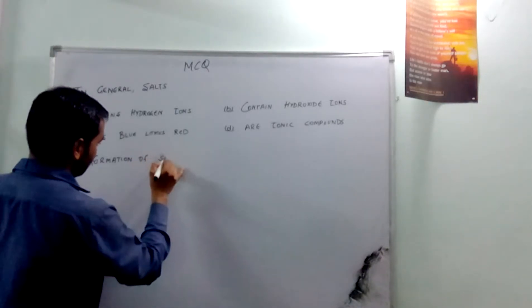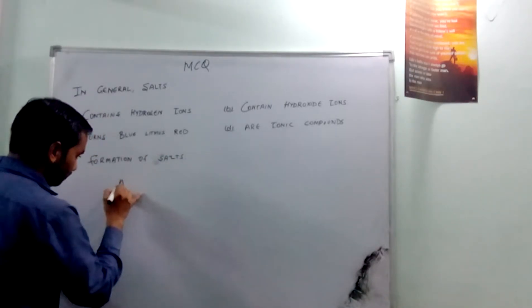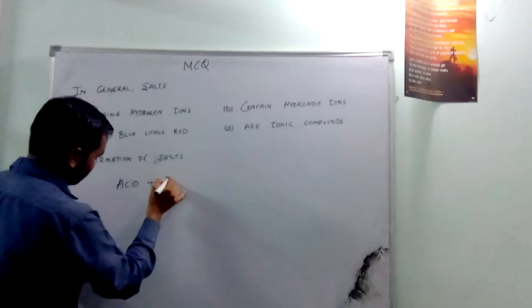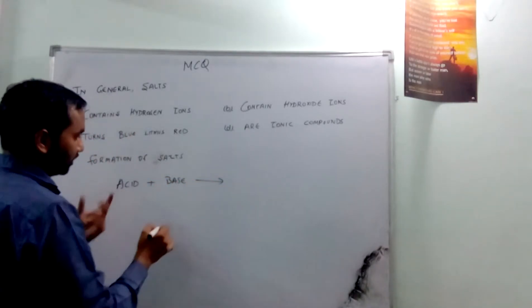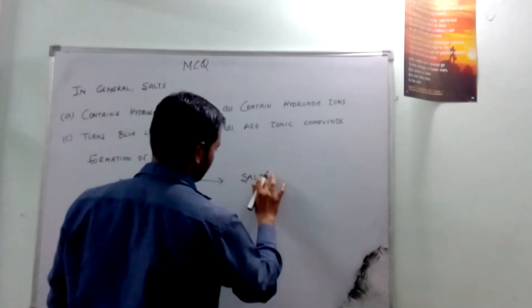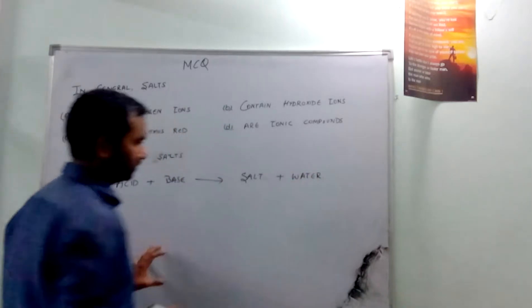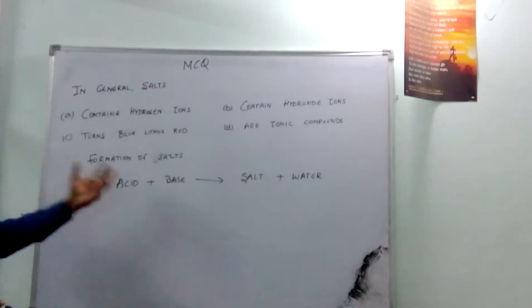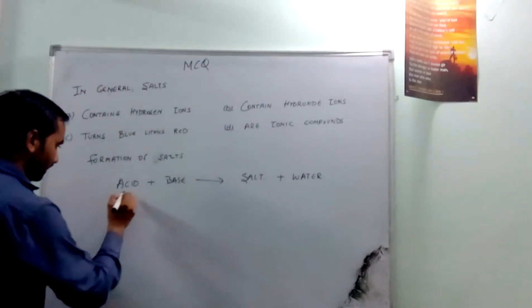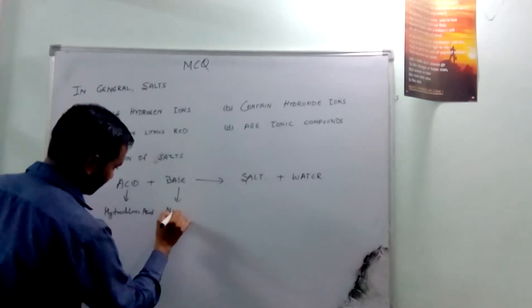Formation of salt: we know that when acid reacts with base, it produces salt and water. Okay? And if I take some example, it will be more clear. Like for acid, I am taking hydrochloric acid, and for base I am taking sodium hydroxide.